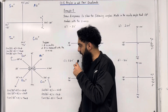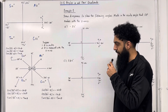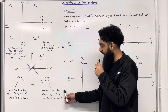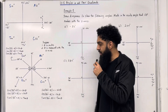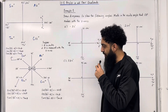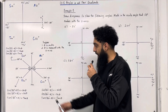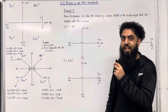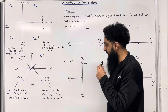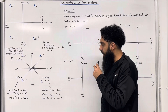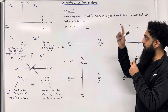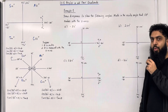Moving on to 360 minus theta: cosine of (360 minus theta) is positive cos theta, because in this quadrant cosine is positive. And tan of (360 minus theta) is minus tan theta, because in this quadrant tan is negative. Those are the key facts of 10.1 angles in all four quadrants.